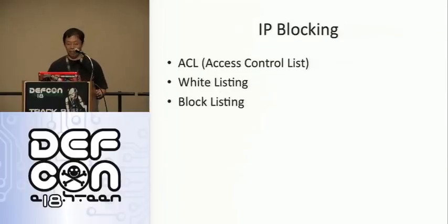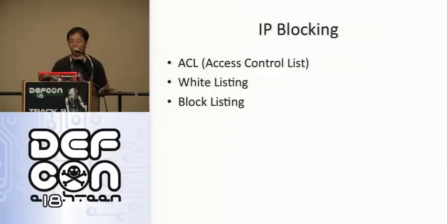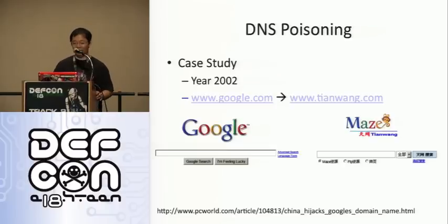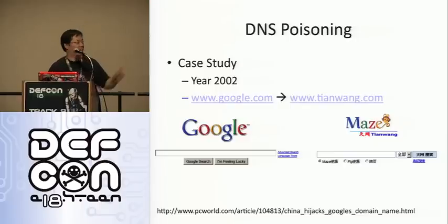IP blocking is a very easy one — it's whitelist and blacklist. Not 'block list,' right? You will find it in the 202 range, and when you go to Google you will find it redirected.